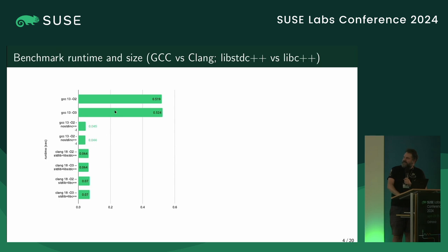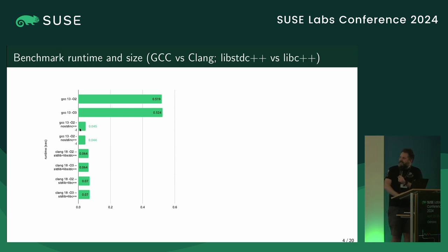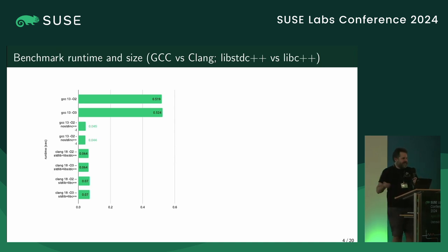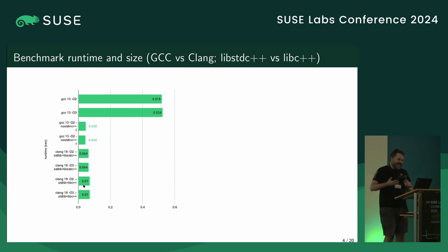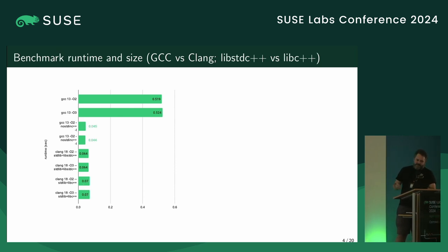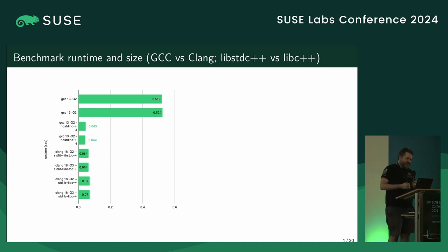I also tried a different runtime. This is GCC with the GCC standard library, and this is GCC with the Clang standard library, libc++. It turns out that GCC with the Clang library is much faster than with our library, but Clang is faster with GCC library and slower with the Clang library. So it gets slightly confusing — even these most advanced compilers in the world are not smart enough to optimize a push operation on the stack.